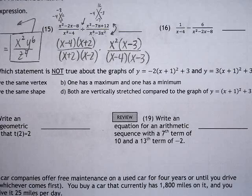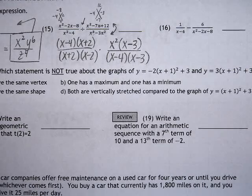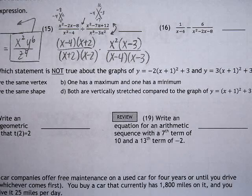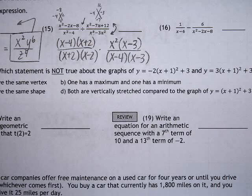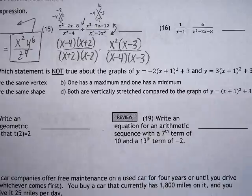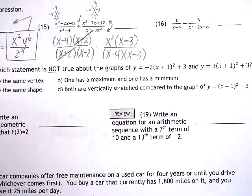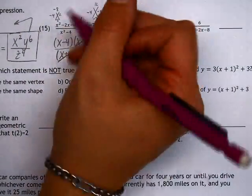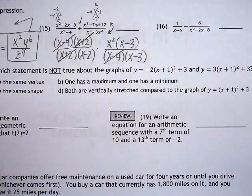Once we've factored everything, it's our job to look to see if we can cancel as many pairs as possible. A pair has to be an exact match and we can take one from the top as long as we take one from the bottom that matches it. So x + 2, for example, can cancel from top and bottom. Another example of canceling could be x - 4 top and bottom.